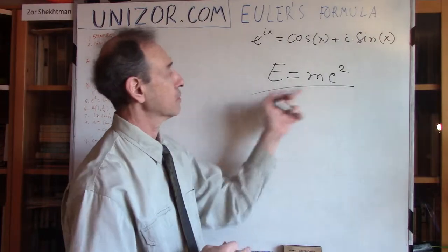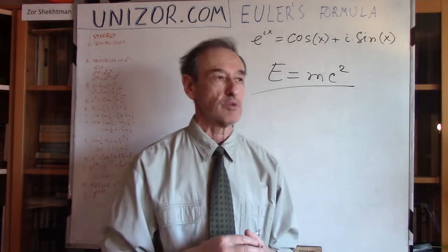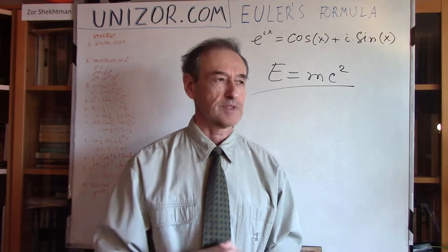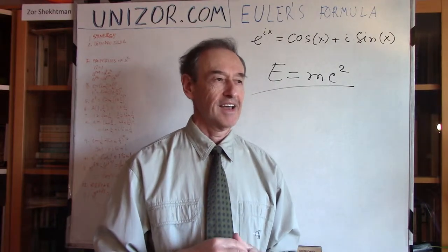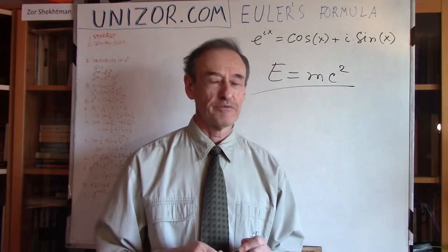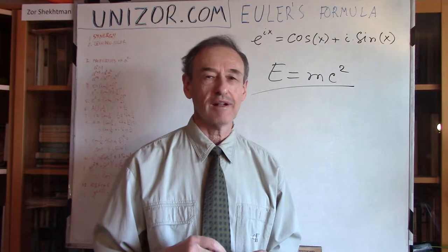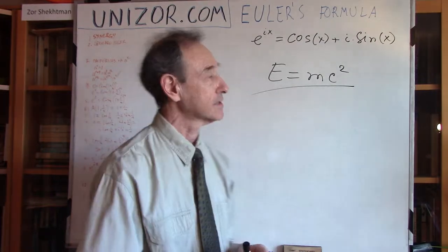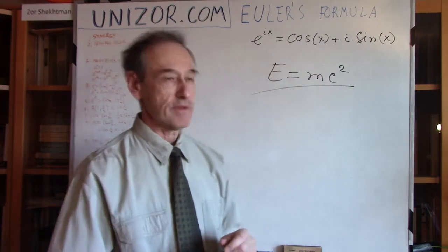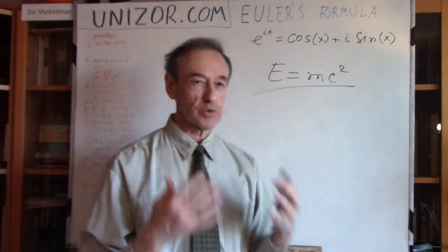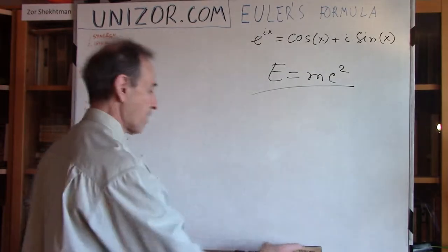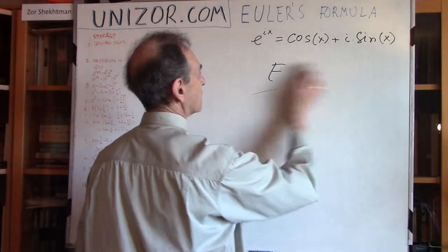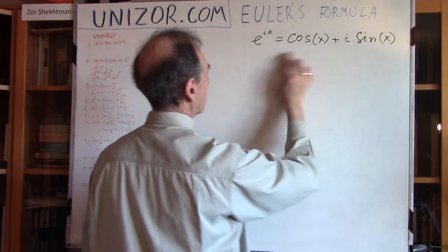This particular relationship is something which was like a very, very bright result — the result of a very, very bright mind. So this formula in mathematics is also the result of a very, very bright mind who basically came up with it.